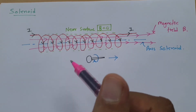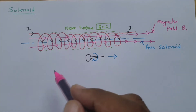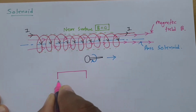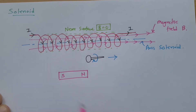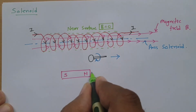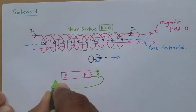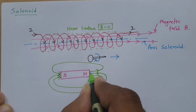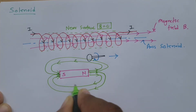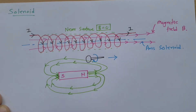Now I will draw the magnetic field direction. If you observe a magnet, it has two poles: N pole and S pole. The magnetic field emerges from the N pole and gets enclosed at the S pole. You can see the magnetic field emerging from the N pole and being enclosed at the S pole.